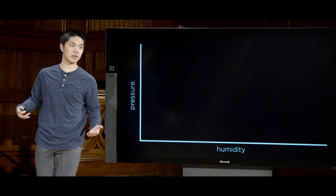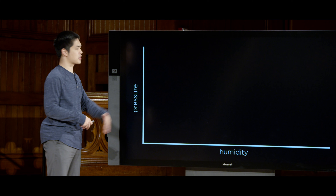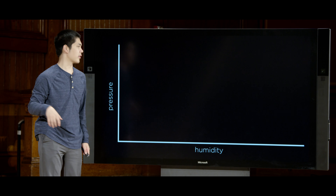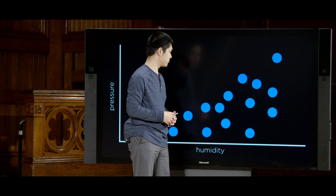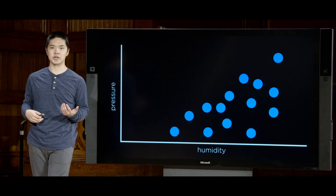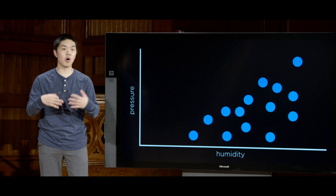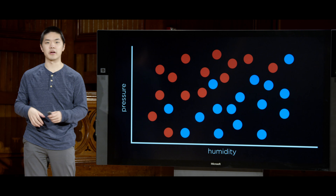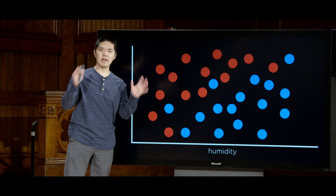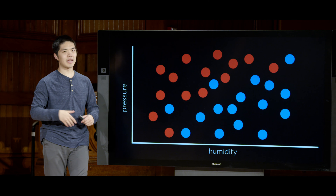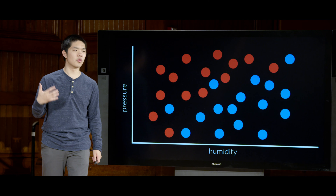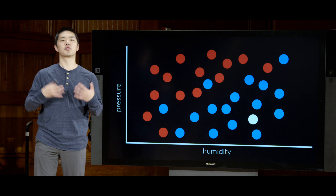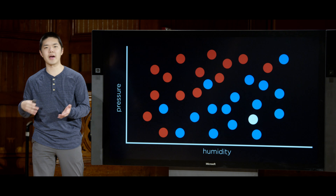With two inputs, we'll graph along two axes: an x-axis representing humidity and a y-axis representing pressure. We take all the days that were raining and plot them on this graph — each rainy day is a blue dot corresponding to a particular value for humidity and pressure. We do the same with days that were not rainy, plotting them in red. Then, if I'm presented with a new input — a white dot without a label — I'd like to predict whether it should be classified as a blue dot (rainy day) or a red dot (not rainy day).